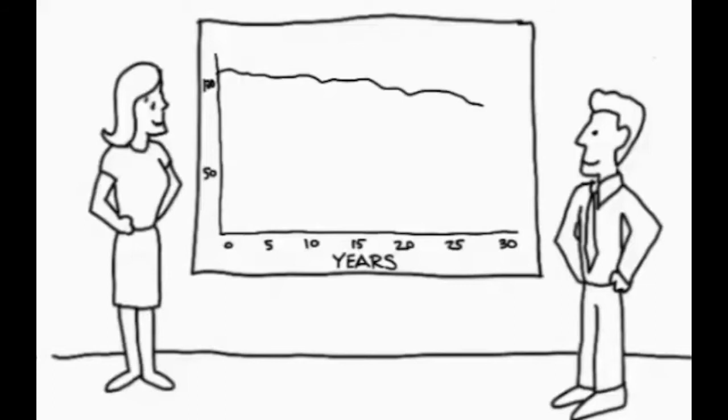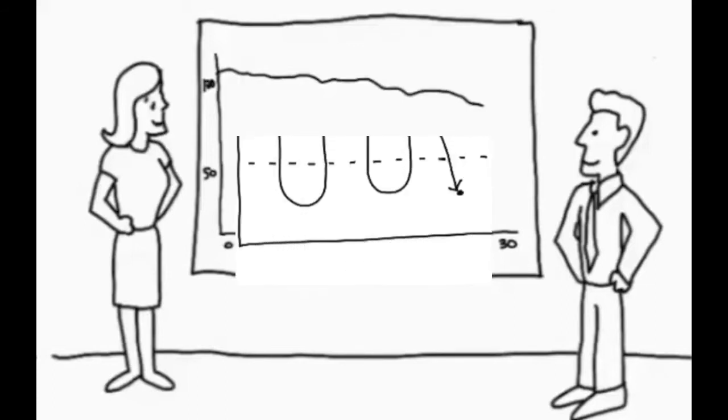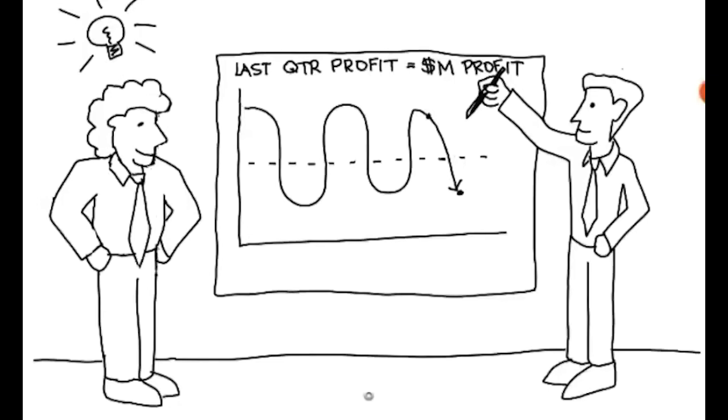All of these interact together to create a structure that generates the behaviors we see. What systems thinking offers is a set of principles and practices that help us develop a shared picture, a visual mental model of the system we wish to change. We see it in our minds, and when we can see it, we have the potential to find leverage.